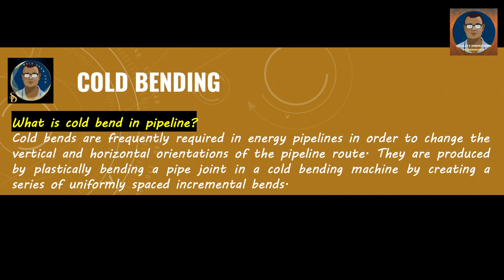What is a cold bend in pipeline? Cold bends are frequently required in energy pipelines in order to change the vertical and horizontal direction of the pipeline route. The vertical bends are generally termed as overbend and sag bend. They are produced by plastically bending a pipe joint in a cold bending machine by creating a series of uniformly spaced incremental bends. In site language we are calling it a bite.